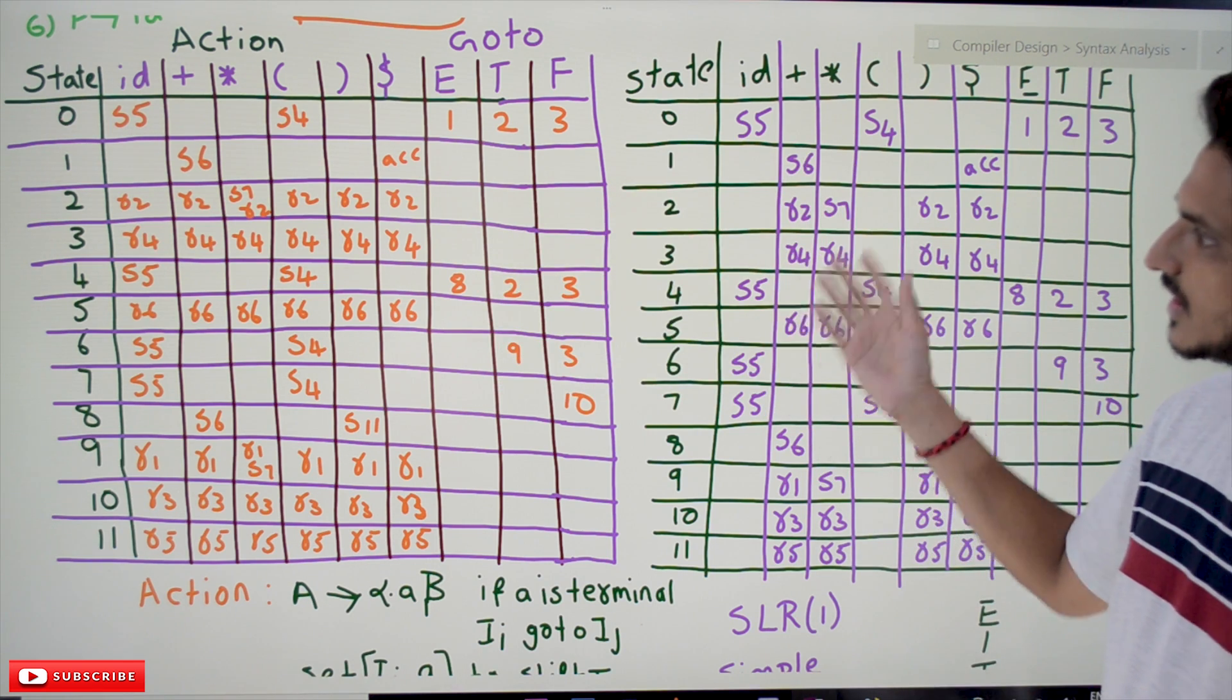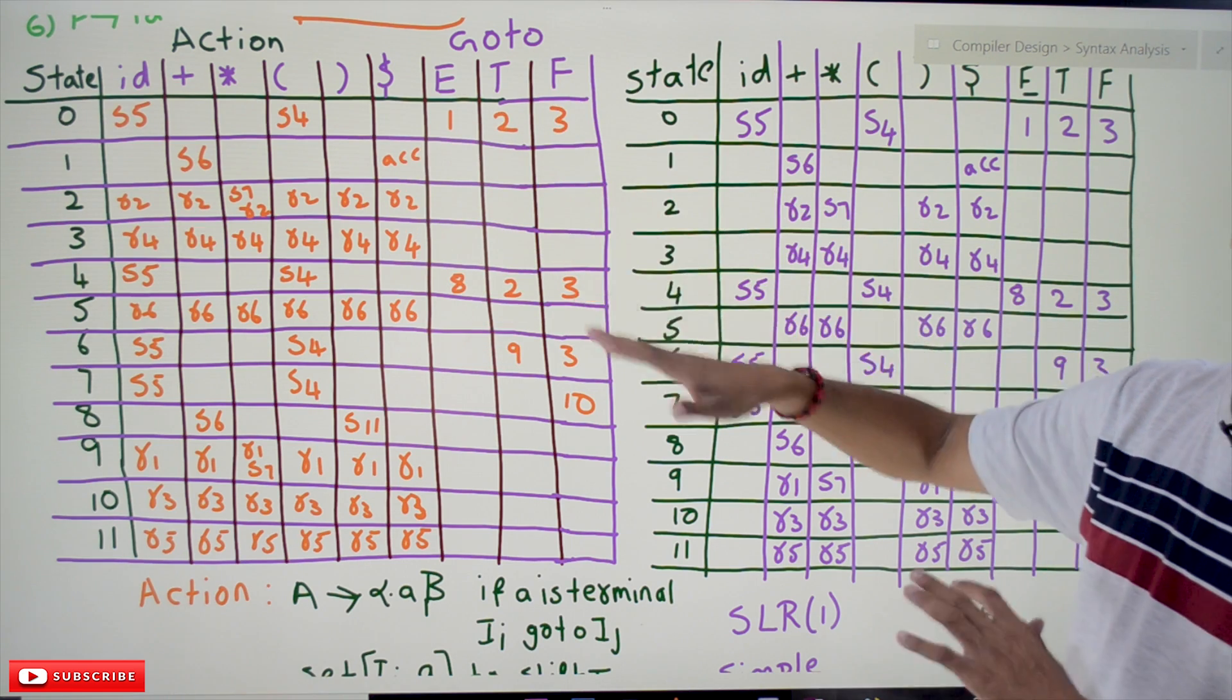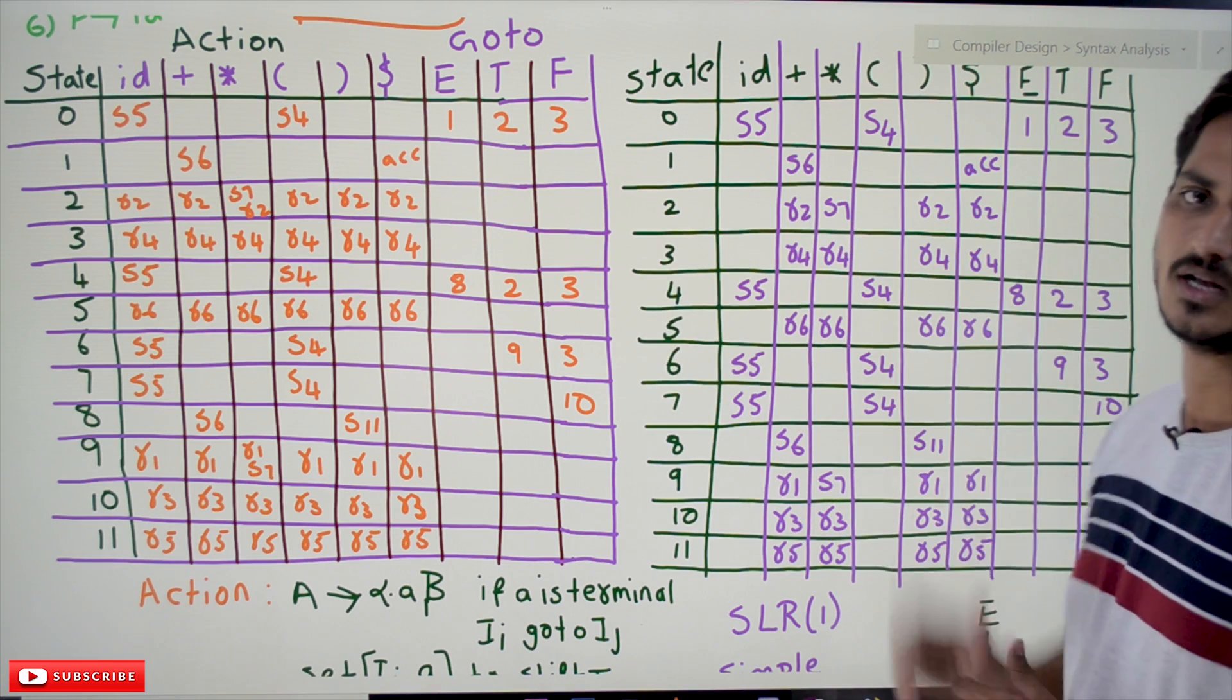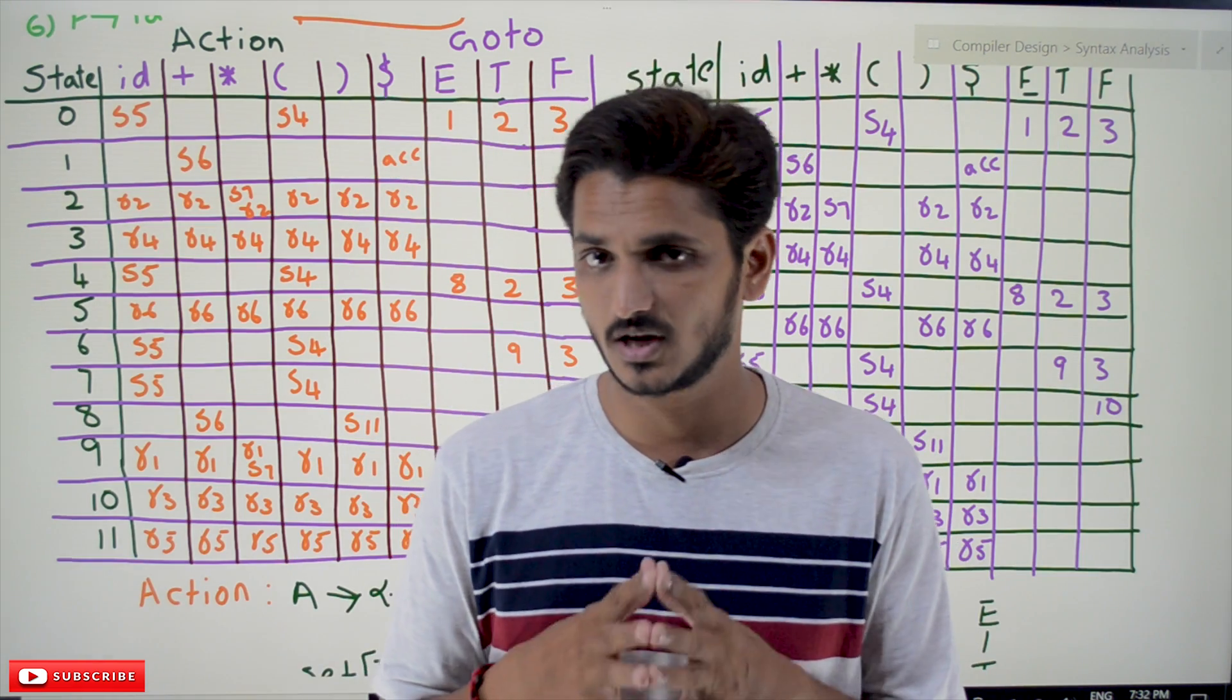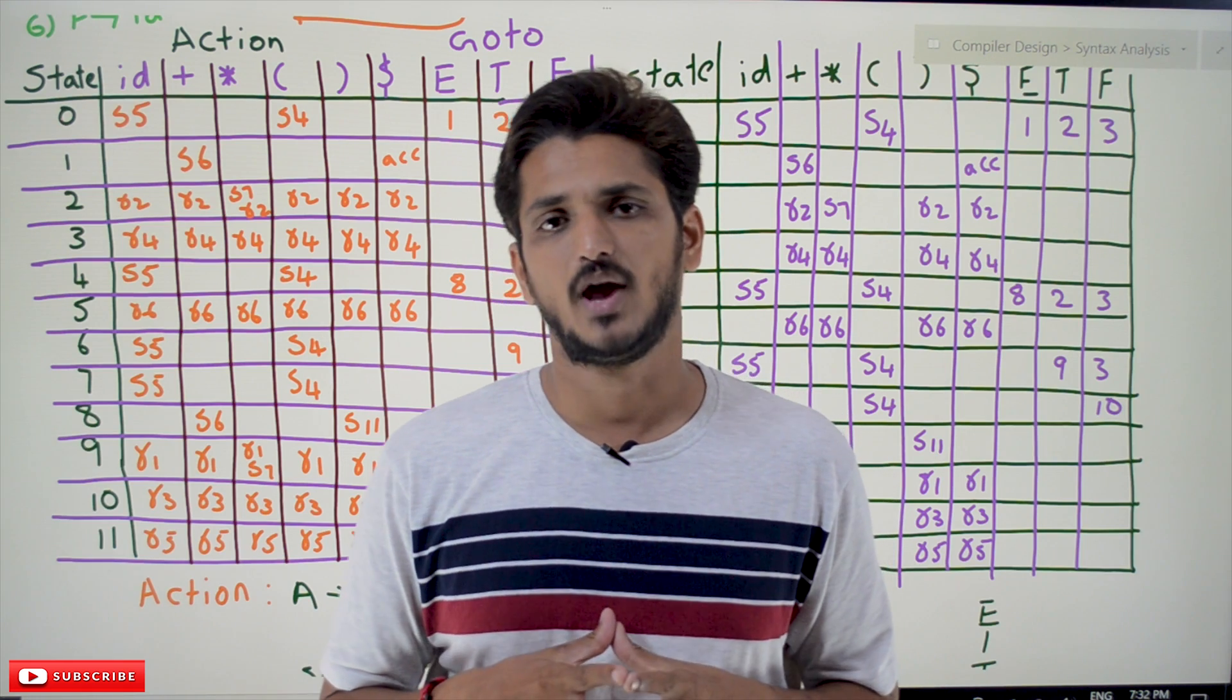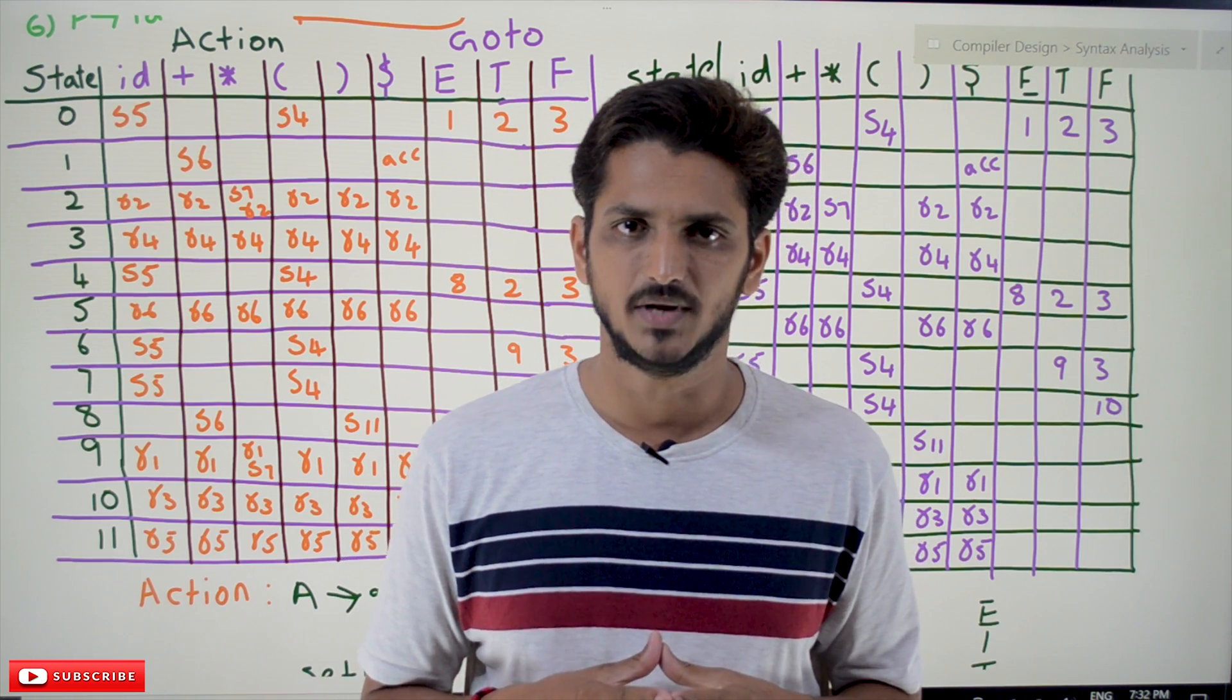That is the difference between LR(0) and SLR(1). Other than this, everything is the same. Shift action and goto action are similar to both LR(0) and SLR(1) parsing tables. Hope you understand the difference. If you have any questions please post them in the comment section below. Thanks for watching. If you haven't subscribed to our channel, please subscribe and press the bell icon for the latest updates. Thank you.